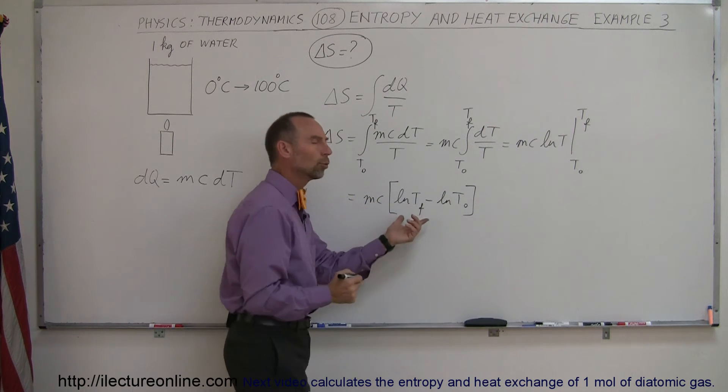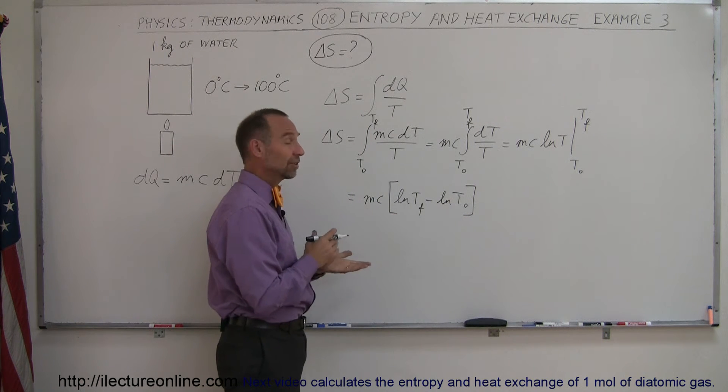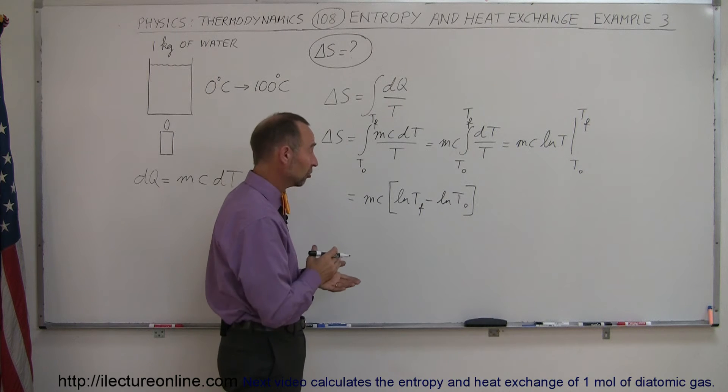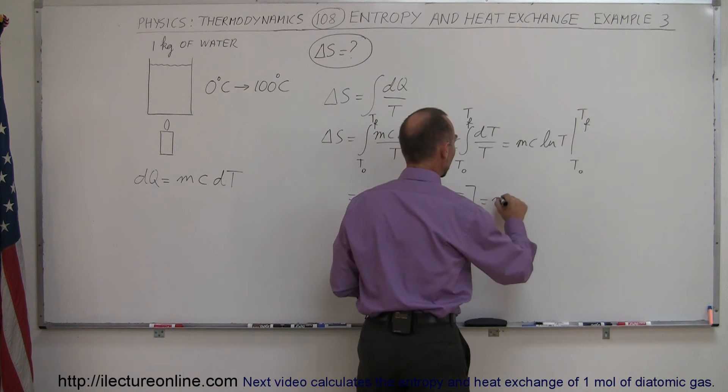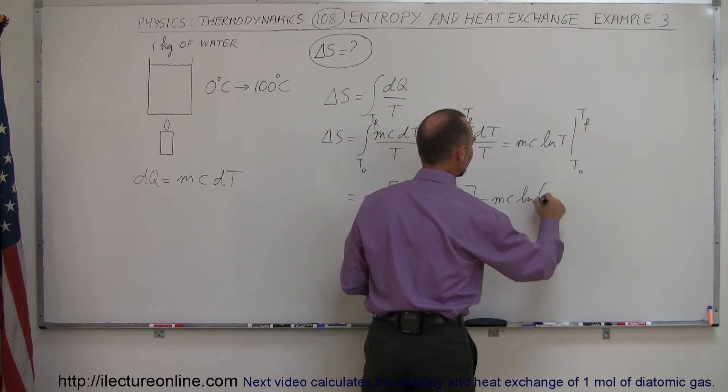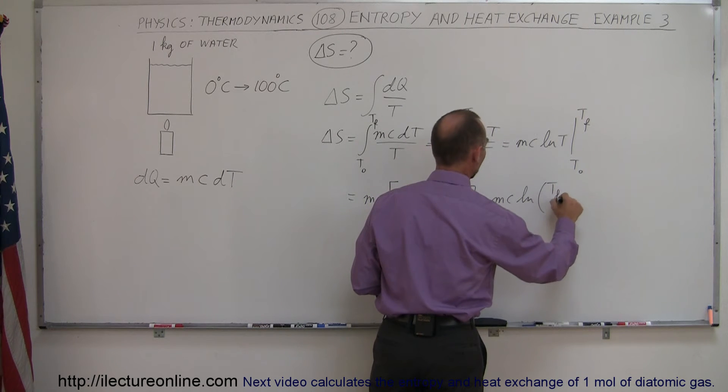And of course using the rules of logarithms, the natural log of T final minus the natural log of T initial can be written as mc times the natural log of the ratio of T final divided by T initial.